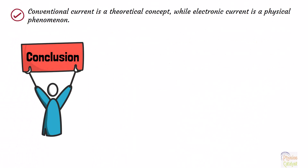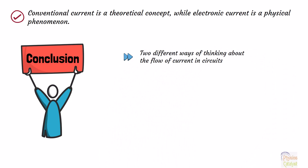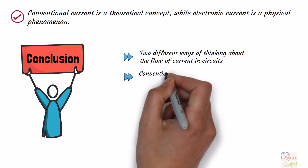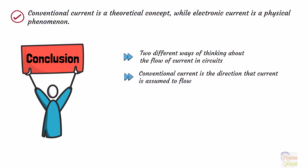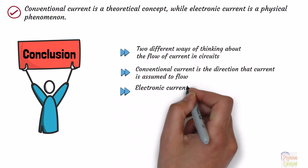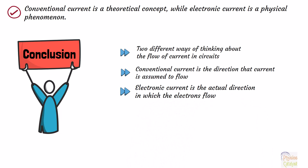In conclusion, conventional current and electronic current are two different ways of thinking about the flow of electric current in circuits. Conventional current is the direction that current is assumed to flow, while electronic current is the actual direction in which the electrons flow. We still use the concept of conventional current in circuit diagrams because it is easier to visualize the flow of current in this direction. However, we know that electrons actually flow in the opposite direction.